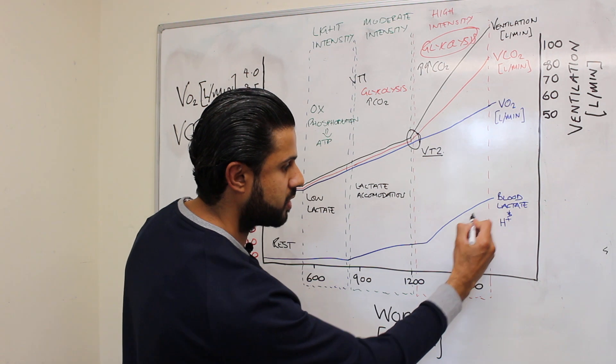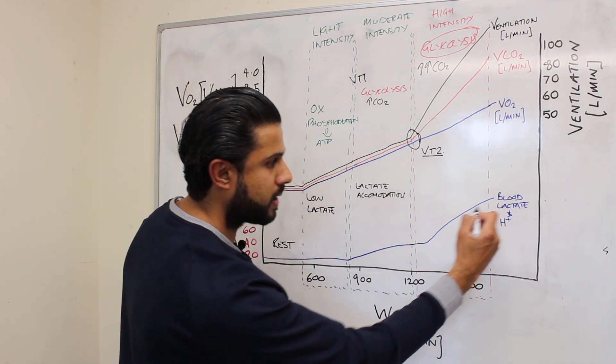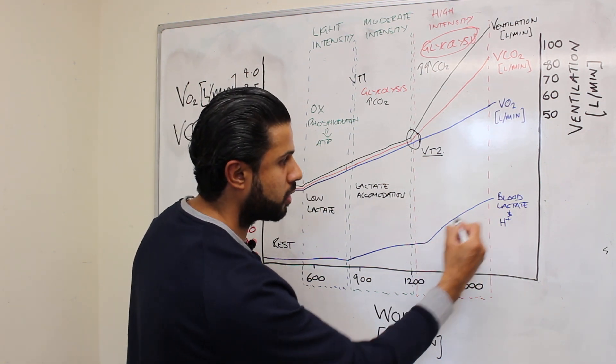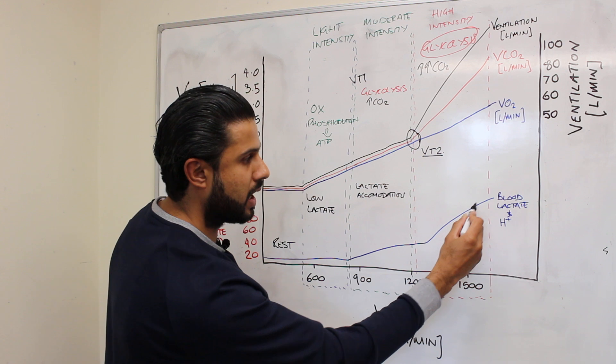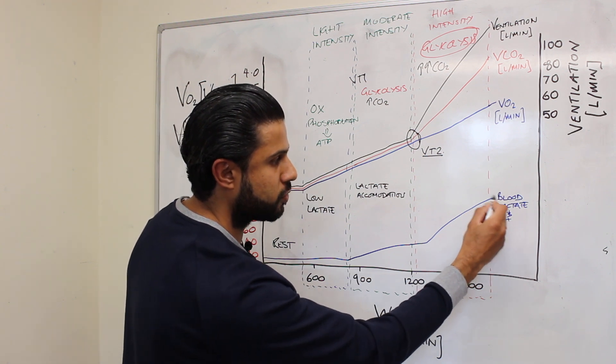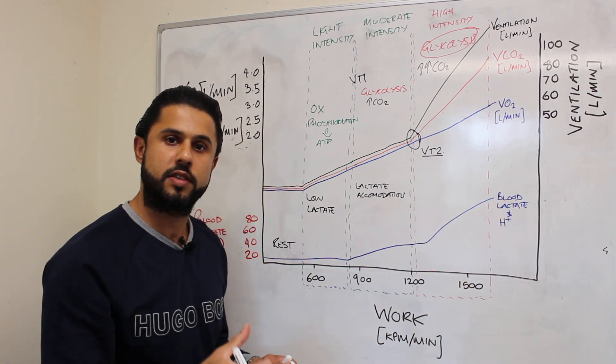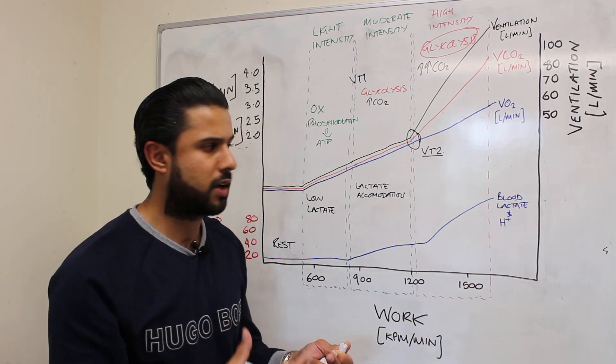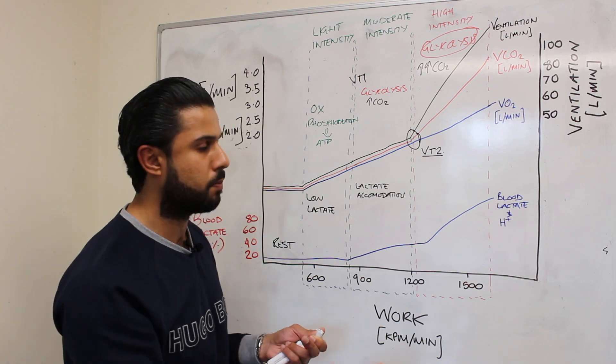They increase quite rapidly and they're also going up towards a level which would deem the individual to have significant acidosis. Enzymes would stop working or they wouldn't work effectively and muscle contraction then stops which results in fatigue and we stop the exercise.